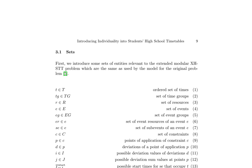The authors introduce the sets of entities relevant to the extended modular X-HSTT problem, identical to those in the original problem. The sets include T (an ordered set of times), TG (a set of time groups), R (a set of resources), E (a set of events), EG (a set of event groups), R_E (a set of event resources of an event E), SE (a set of sub-events of an event E), C (a set of constraints), P (points of application of constraints), D (deviations of a point of application P), I (possible deviation values), and J (possible deviation sum values).